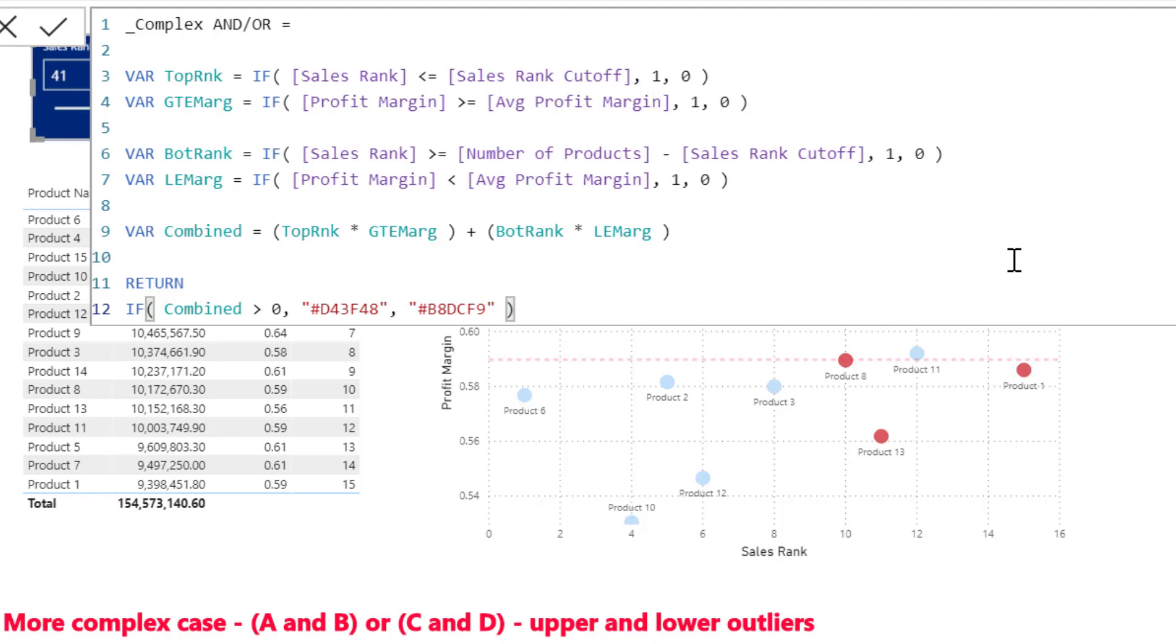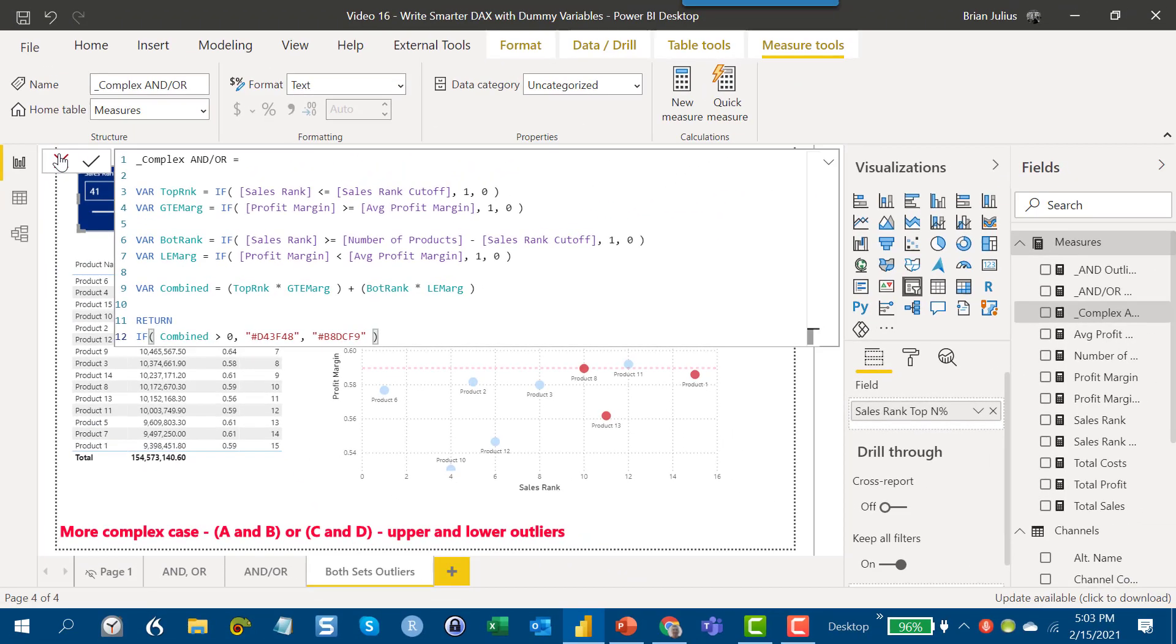And if we look at this one, this is exactly what we talked about in the final case where we've now set all four of our criteria to dummy variables. And then we look here at the top rank, so we've got a multiplication for AND, so the top rank in terms of sales rank times the greater than or equal to marginal for profit margin, and the OR condition here, and then the bottom rank for sales and the bottom for profit margin. So if one or the other of these is true, it returns the red, and if not, it returns the blue.